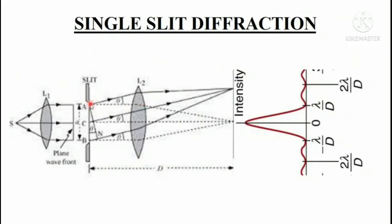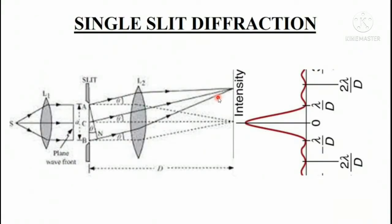Here we will see how the diffraction pattern is formed. This is our slit — monochromatic source light falls on the lens to make it parallel, and then this parallel beam falls on the slit AAB. When a light wave falls on AAB, each point of this wave will behave as a fresh source of disturbance and will send waves in all possible directions. Some waves go straight and interfere at this point, where we get maximum intensity because they are all meeting constructively. Then some are bending at an angle theta and reaching at another point, and the intensity at this point will be decided by the path difference of the light waves interfering.